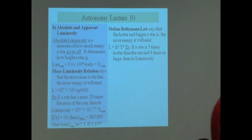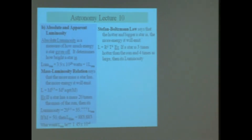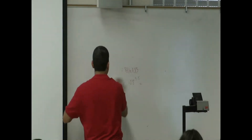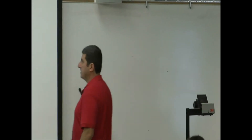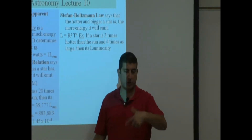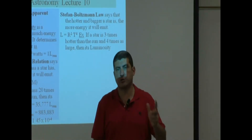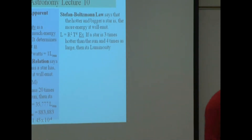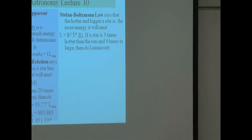Where is this coming from? One of the difficulties about this equation that students might have is that they won't remember which one is squared and which one is fourth. They might think it's radius to the fourth, temperature squared. They might think it's radius squared, temperature squared. So how do you remember which one to square? Well, if you understand where the law is coming from, it's going to make it easier.